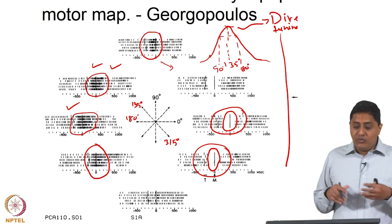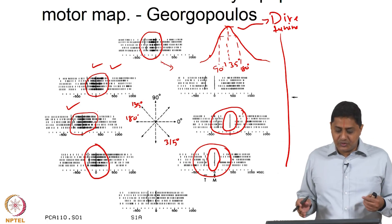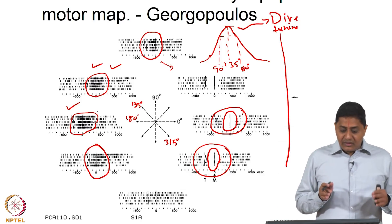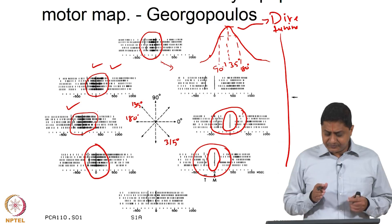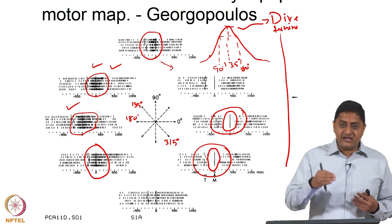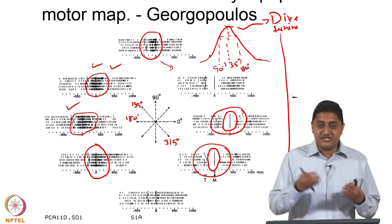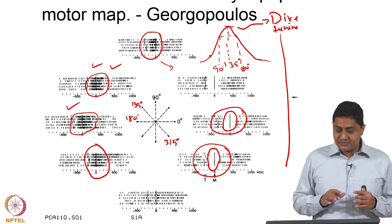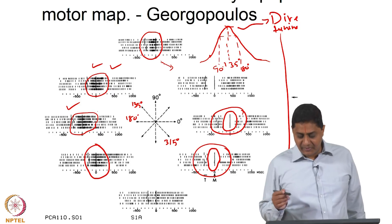What Georgopoulos did was find directional tuning curves for a whole bunch of other neurons, and he found that different neurons had different preferred directions. Effectively, each neuron's activity in a particular direction can be represented as a vector. If you add the activity of all the cells together — that is, take the vector sum across each direction — the entire population of neurons will predict the overall direction of movement made by the primate.